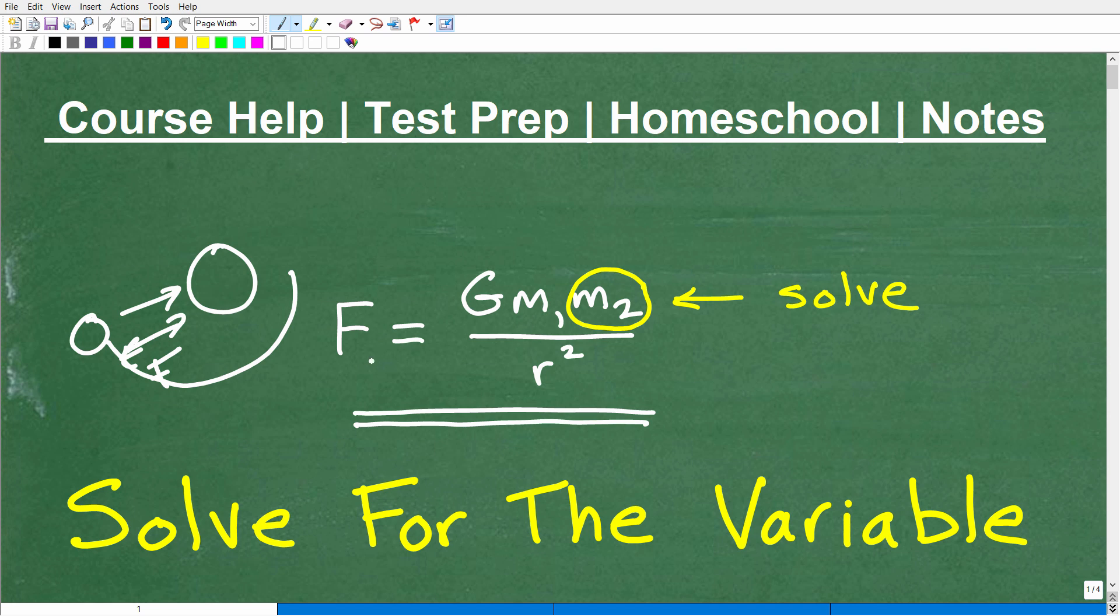So this particular formula is the formula to calculate the force between two objects. It's described as F, or the force of gravitation, equal to the gravitational constant times m1, the mass of one object, times the mass of the second object divided by the radius squared.